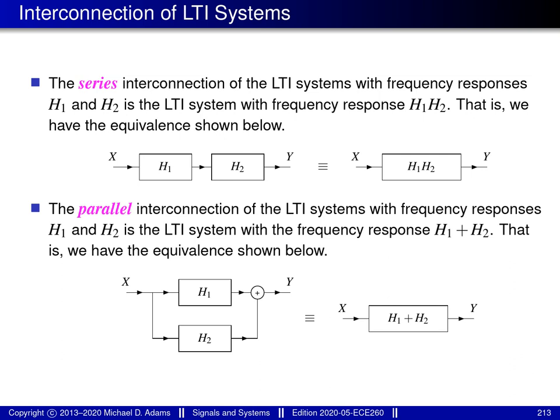Earlier in the course, we were introduced to series and parallel interconnections of systems. For series interconnections: the series connection of two LTI systems with frequency responses H1 and H2 behaves as a single LTI system whose frequency response is the product H1 times H2, which follows from the convolution property of the Fourier transform.